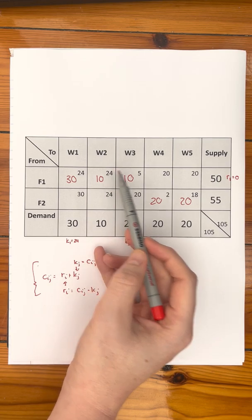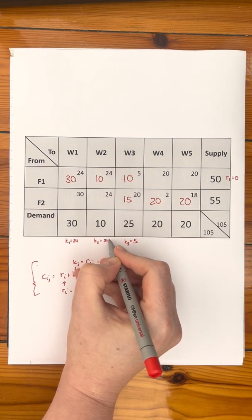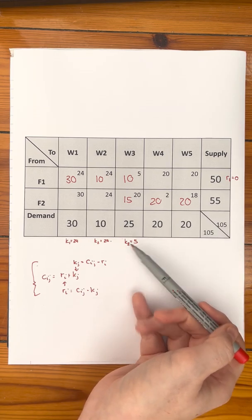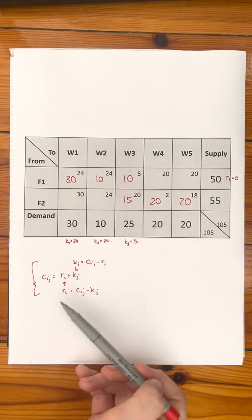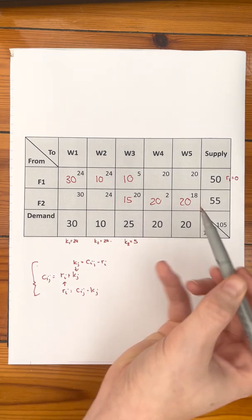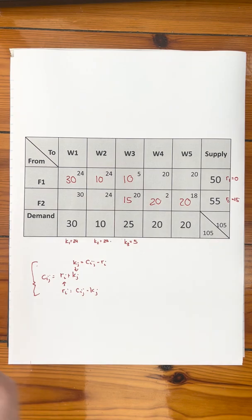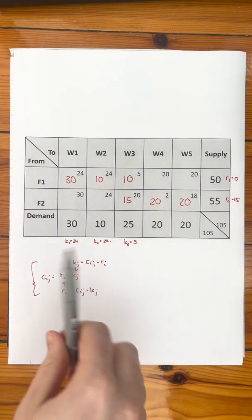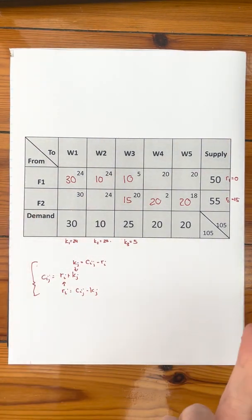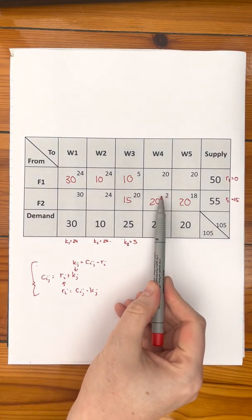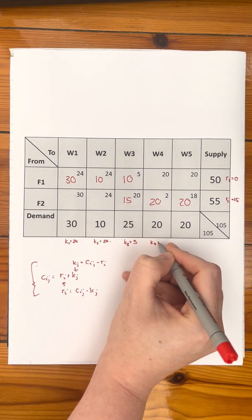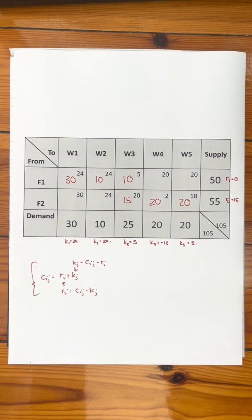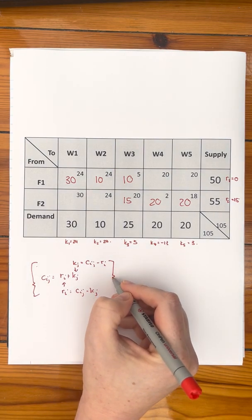Moving on: 24 minus 0 gives us K2 equals 24. Now that we have K3 equals 5, we can use it with the cost coefficient 20 to find the row number: 20 minus 5 gives us R2 equals 15. With R2 known, we can work out the remaining column numbers. We get K4 equals 2 minus 15, which is minus 13, and K5 equals 3. So we've worked out all our row and column values using the formula for our non-empty cells.